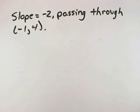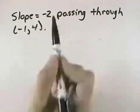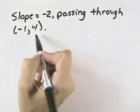Here we want to use the given conditions to write an equation for each line in point-slope form and slope-intercept form. So we know the slope is negative 2, and it passes through the point negative 1, 4.